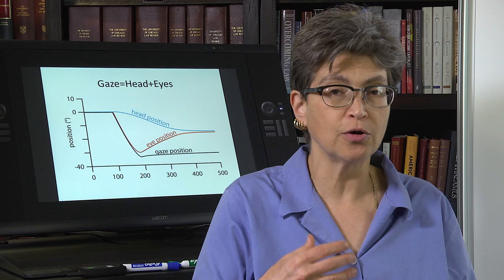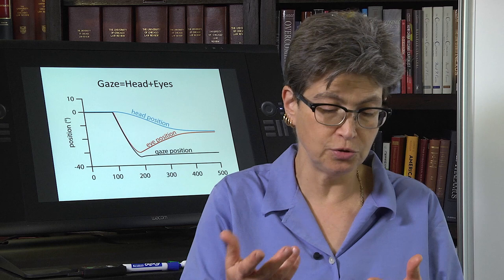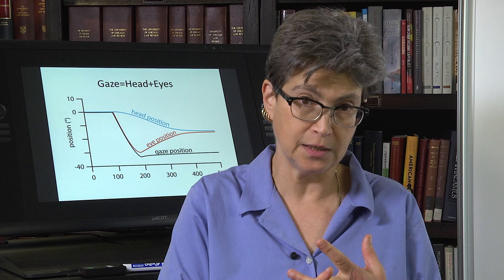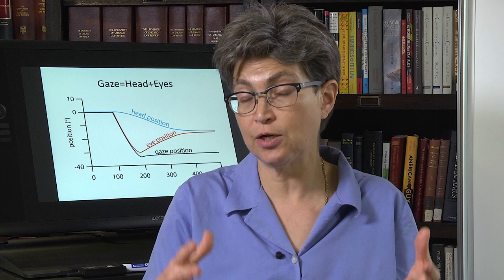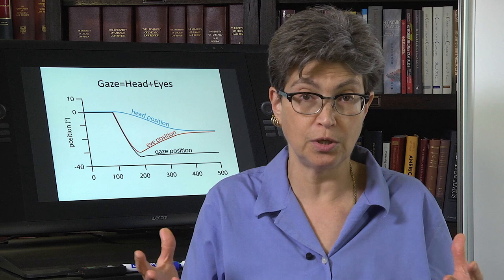Moreover, there are a number of neuropsychiatric disorders — the two that have been studied the most are autism and schizophrenia — which are accompanied by eye movements that are different from what most healthy controls make.